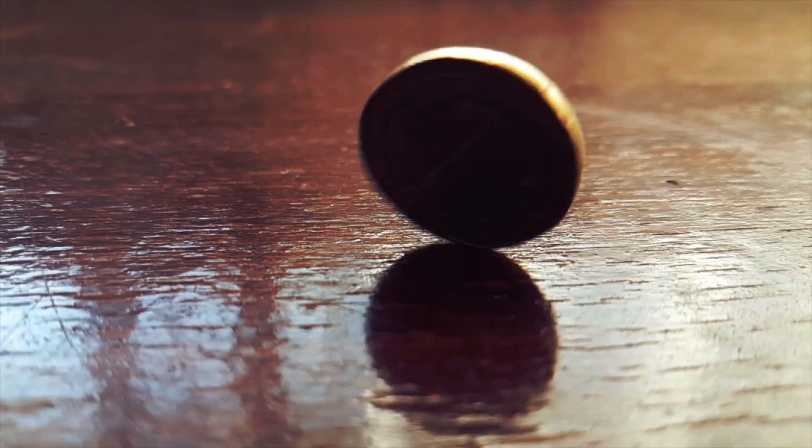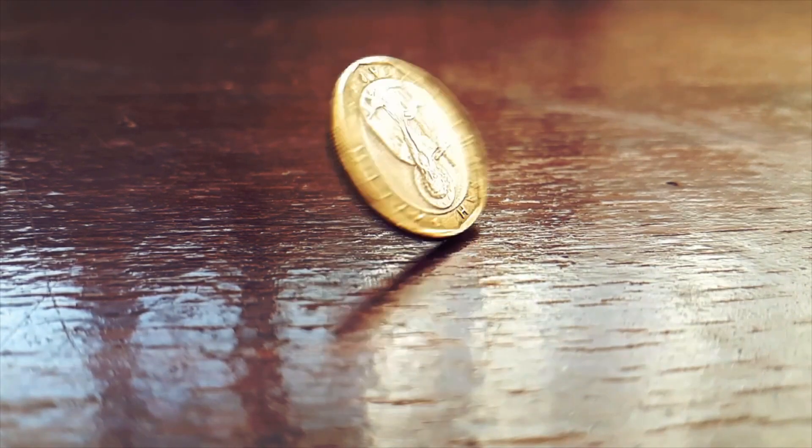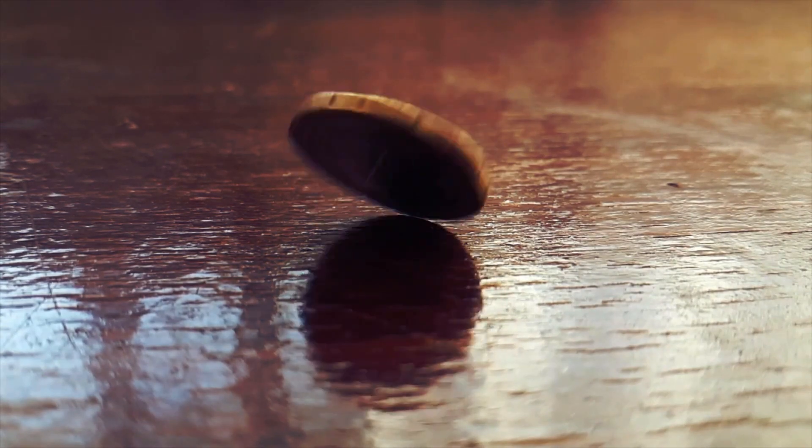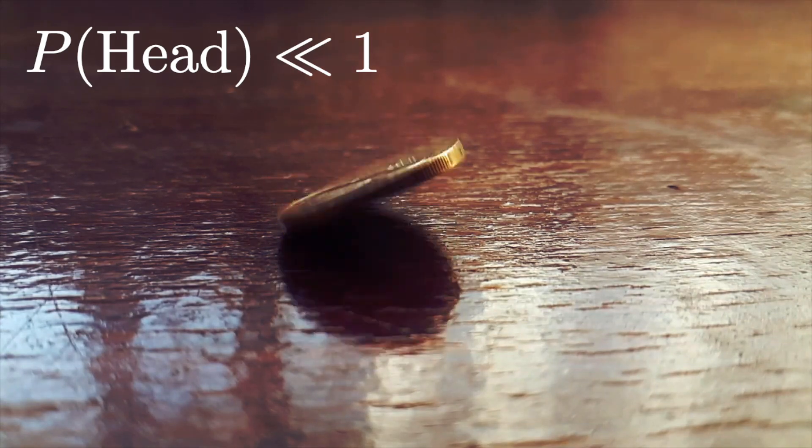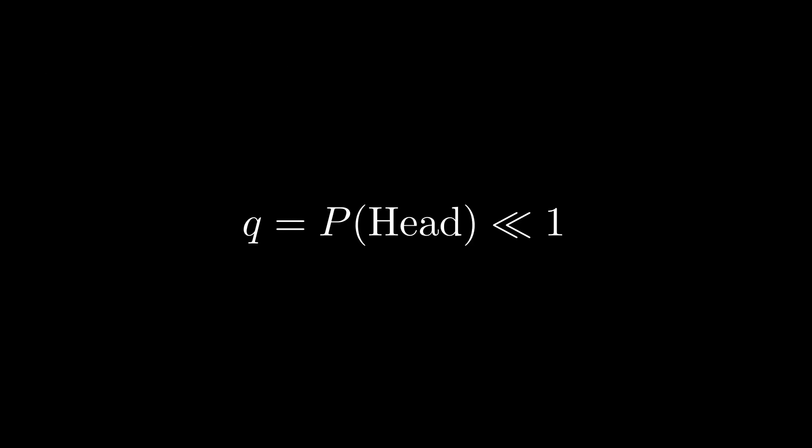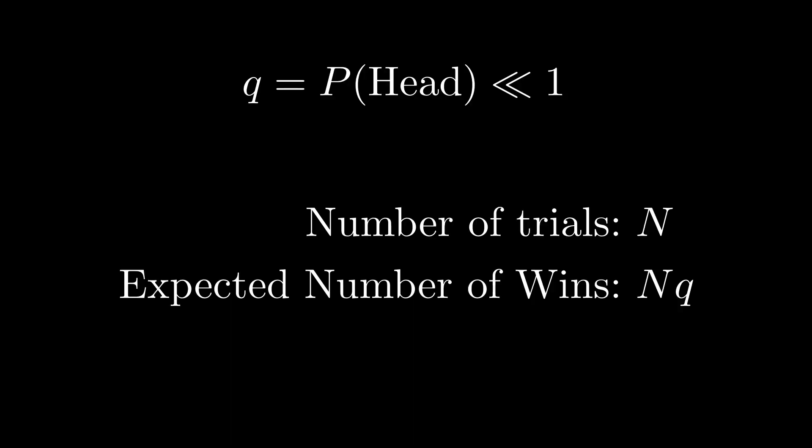We will do a bet. I throw a coin and you win if it is heads. But one thing that I want to tell you is that the coin is rigged and the probability of having heads is tiny. Let's say q, a very small number, is the probability for heads. If you repeat this coin toss N times, how many times would you expect to win? Yeah, you will win around N multiplied by q times. That's just the expected value.